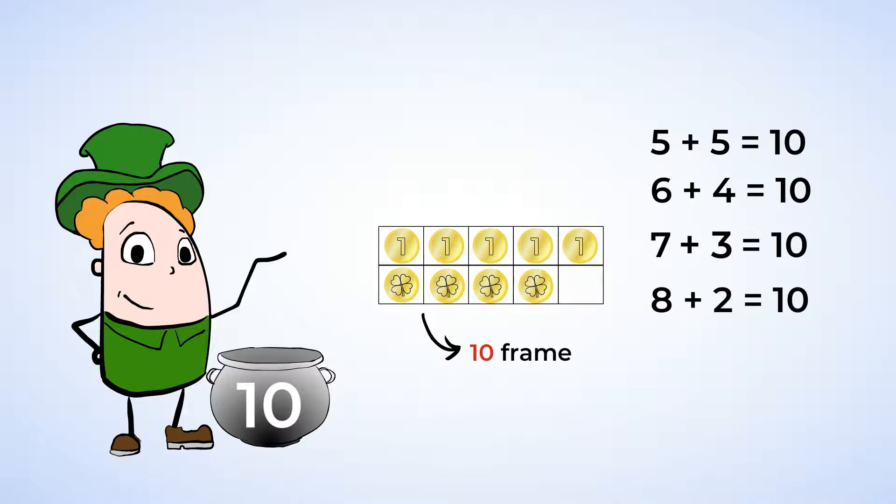And what do you know? Another pot of gold hiding back here. I wonder how many coins it has. Well, let's put them in the ten frame to see. There's five on the top, and keep counting. Six, seven, eight, nine. Nine gold coins in the pot, and there's just one blank square. So we need one gold coin to make ten. And now we know nine plus one equals ten.